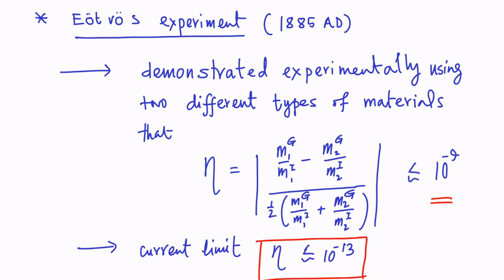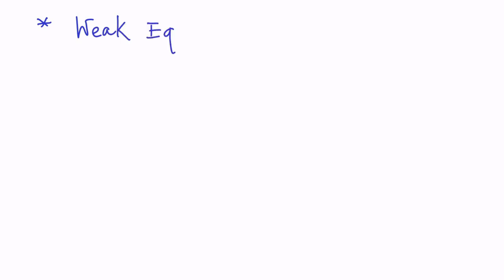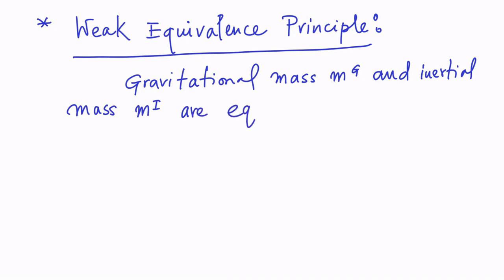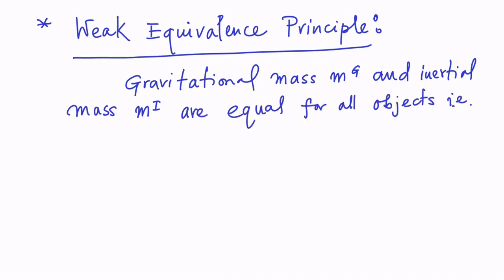The current upper bound on the normalized difference between gravitational mass and inertial mass is less than 10 to the power minus 13. However, experiment can never establish equivalence with absolute precision. Therefore we need to make an axiom. This assumption is known as the weak equivalence principle, which states that gravitational mass m^g and inertial mass m^i are equal for all objects — that is, m^g = m^i.